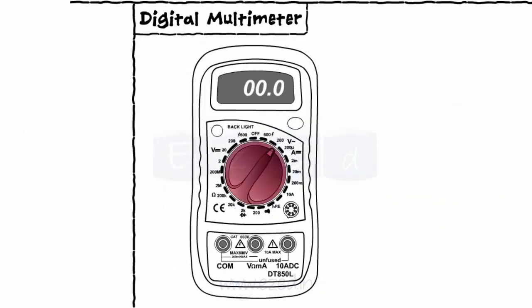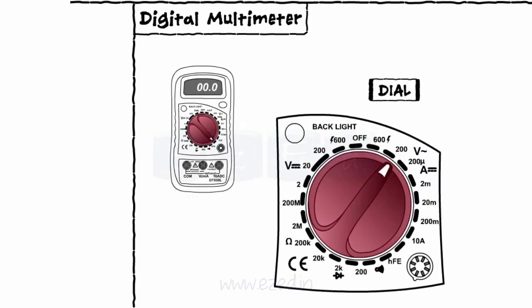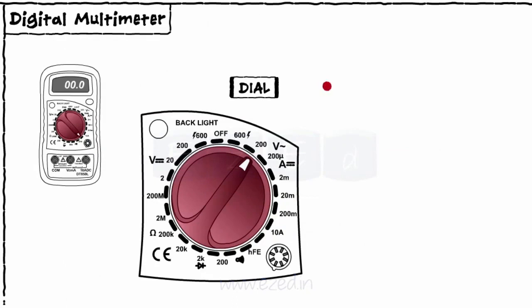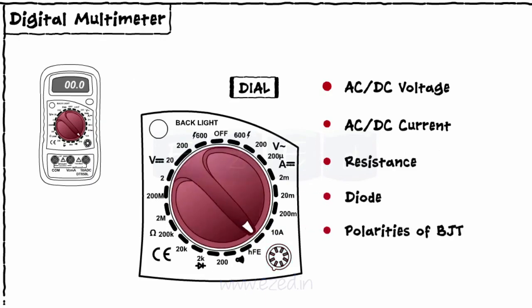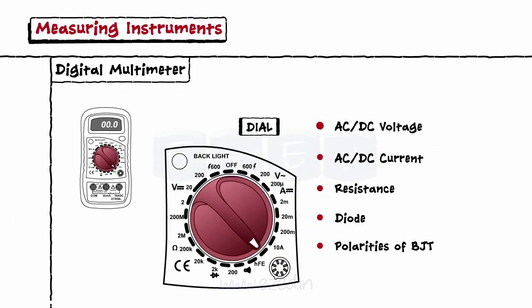Let's study more about digital multimeter. The central rotating switch on the DMM is called the dial of the multimeter. It allows you to choose the function you are interested in measuring. DMM can be used to measure many quantities, like AC or DC voltage, AC or DC current, resistance of different ranges, diodes, polarities of a BJT, etc. But we will restrict ourselves to the measurement of AC-DC voltages, AC-DC current, and resistance.